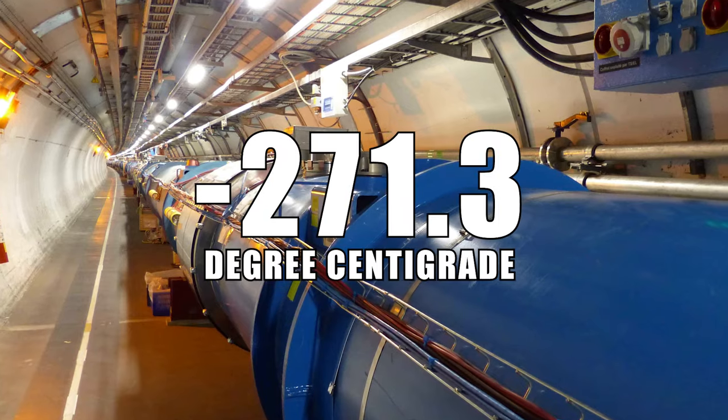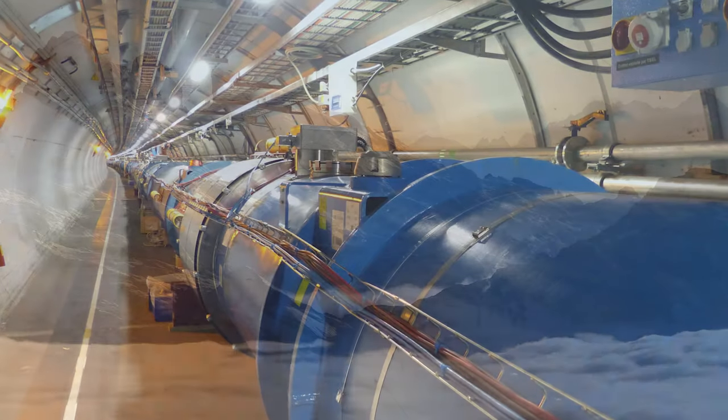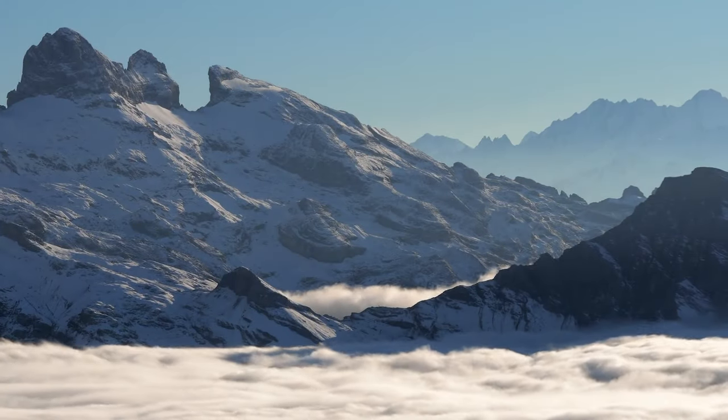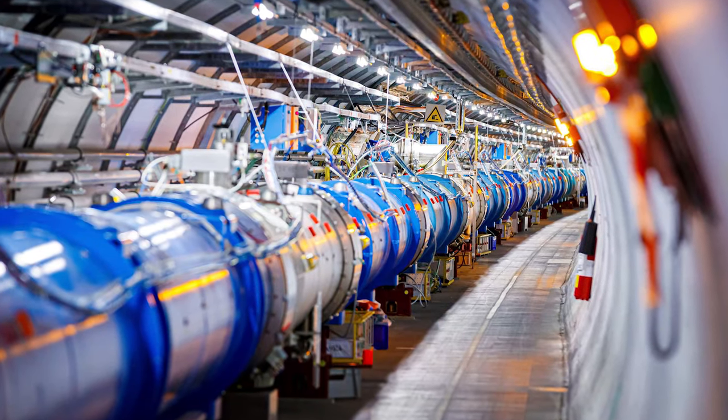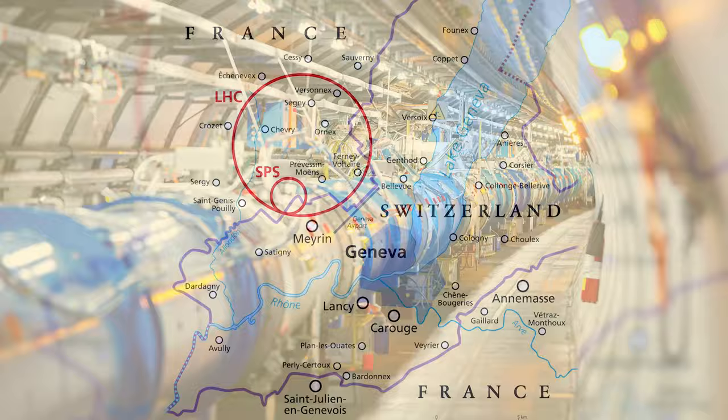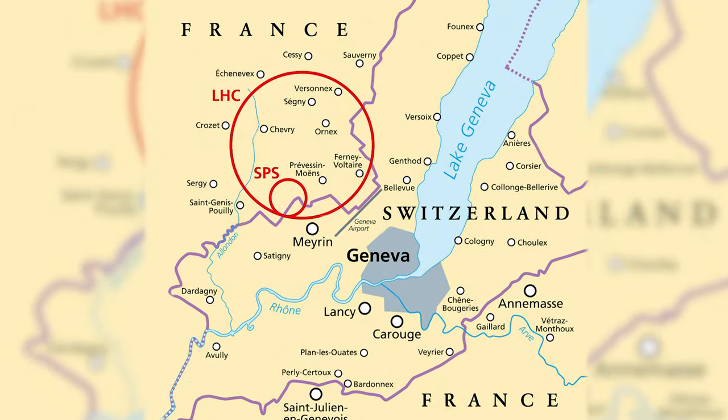About minus 271.3 degrees centigrade, it is the coldest temperature in the entire universe. The Large Hadron Collider sits in a tunnel hundreds of meters under the ground at CERN, on the Franco-Swiss border near Geneva, Switzerland.